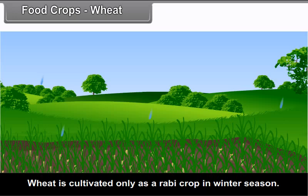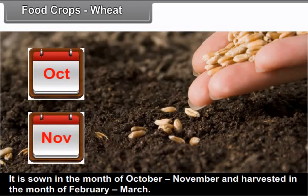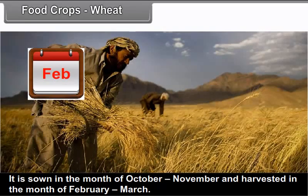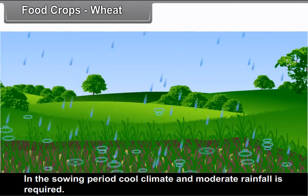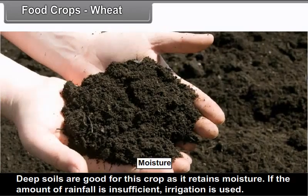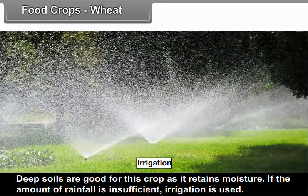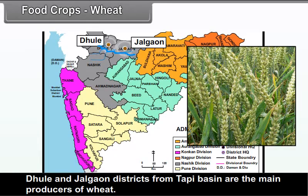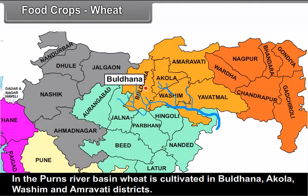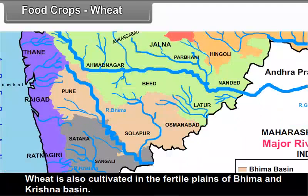Wheat: Wheat is cultivated only as a Rabi crop in the winter season. It is sown in October to November and harvested in February to March. Cool climate and moderate rainfall is required in the sowing period. Deep soils are good as they retain moisture. If rainfall is insufficient, irrigation is used. Dhule and Jalgao districts from the Tapi basin are the main producers of wheat. In the Purna river basin, wheat is cultivated in Buldhana, Akola, Vashim, and Amravati districts. Wheat is also cultivated in the fertile plains of the Bhima and Krishna basin.